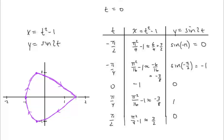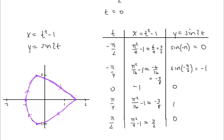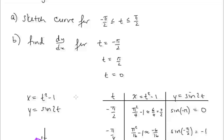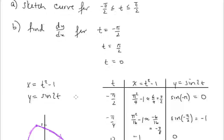Plotting these points: starting at approximately (3/2, 0), then (negative 3/8, negative 1), (negative 1, 0), (negative 3/8, positive 1), and back to (3/2, 0). Our curve traces this shape. For part B, we find the slope dy/dx at t equals negative pi/2, pi/2, and 0.